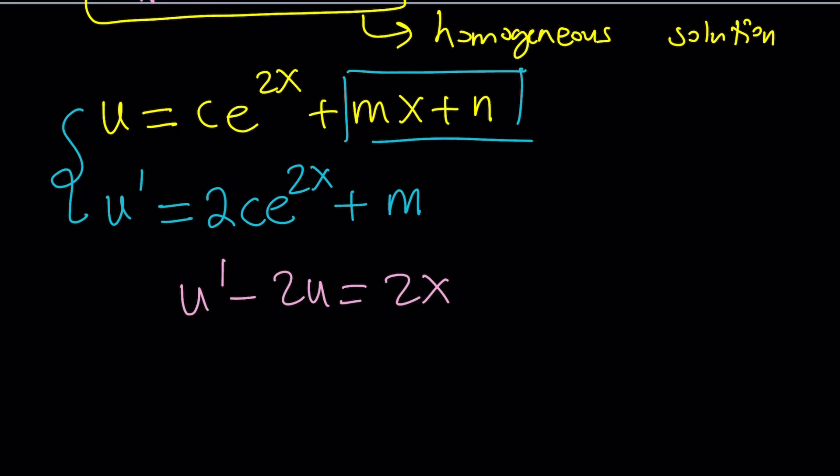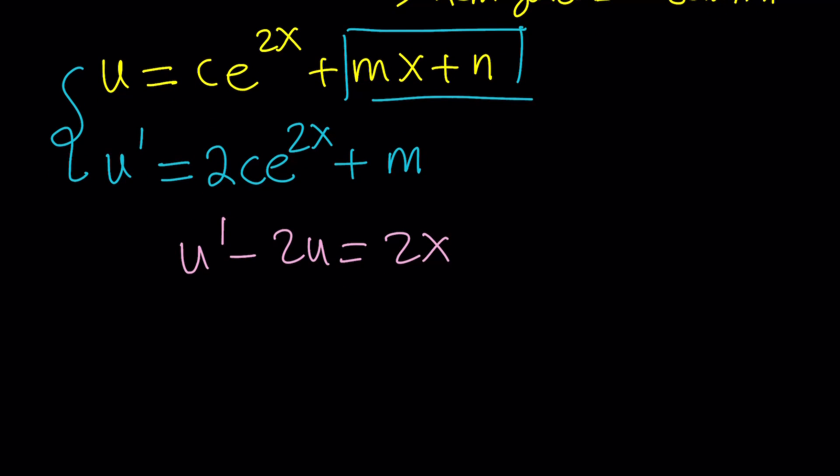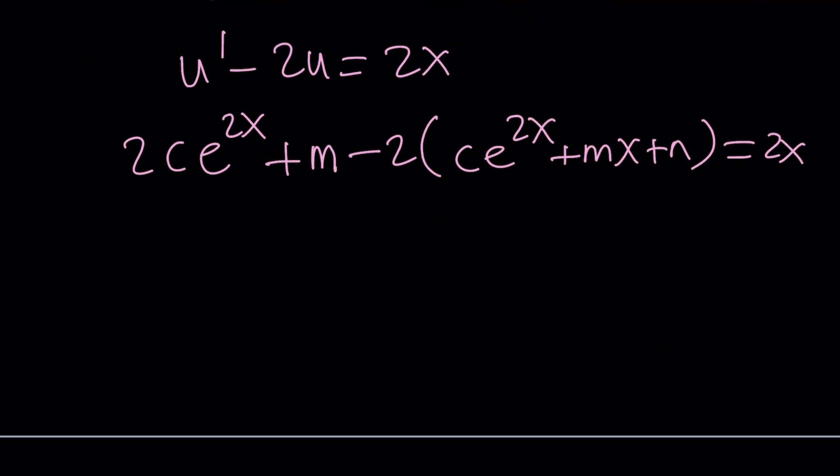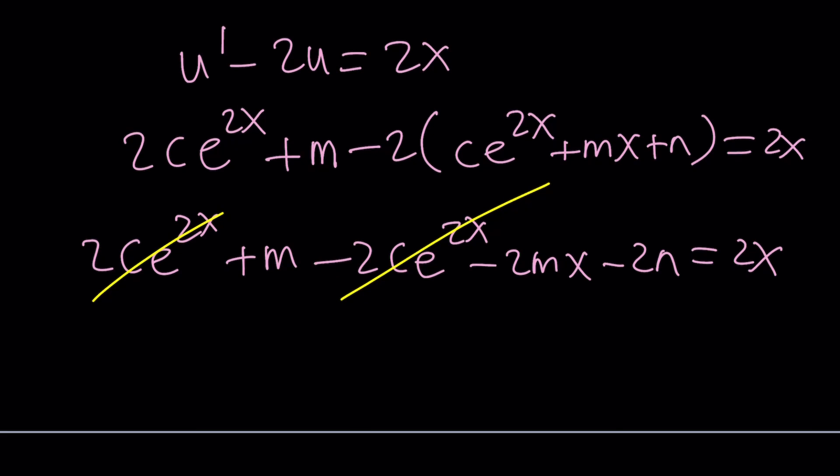This was my non-homogeneous equation. Plug it in. u prime is 2c times e to the power of 2x plus m, that's the u prime, minus 2 times u. u is ce to the 2x plus mx plus n. But when I subtract, I have to negate everything. Notice that something is going to go away. That's what is supposed to happen. Notice that these two terms are going to cancel out, leaving us with no e to the 2x, because we're not supposed to have e to the power of something. That comes from the homogeneous solution.